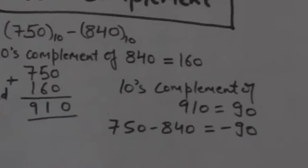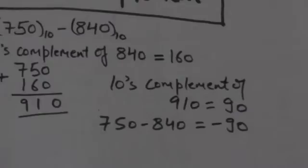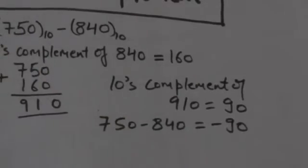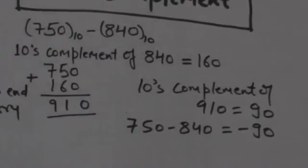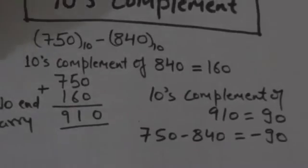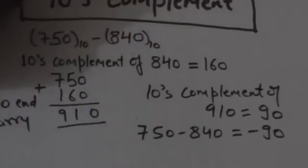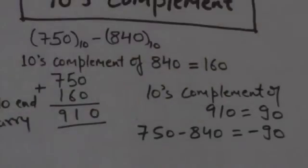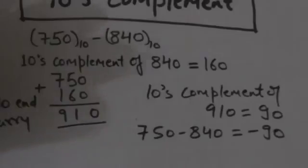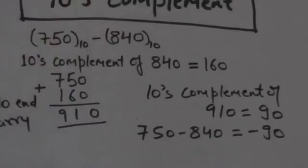This sum produces no end carry. So the result would be the negative of the ten's complement of this sum. The ten's complement of 910 is 90, and when we put a negative sign in front of it, it becomes minus 90. So we find the R's complement of the number we are subtracting, add it with the other number, and if the sum produces no end carry, the result is the negative R's complement of the sum.